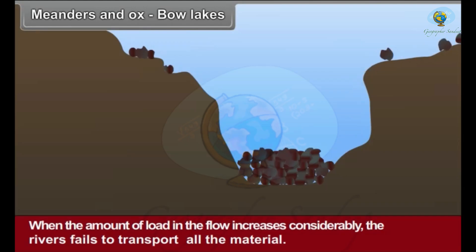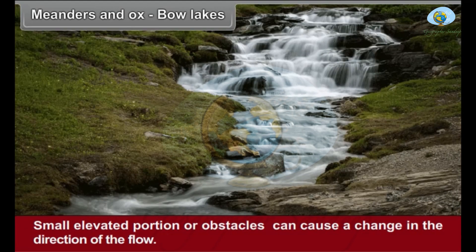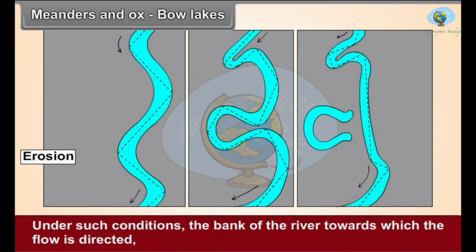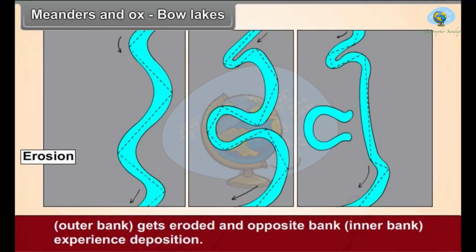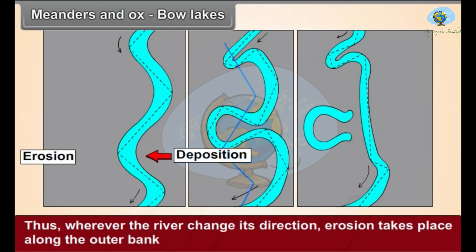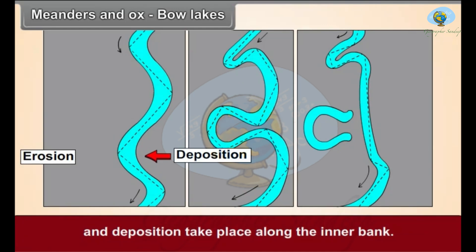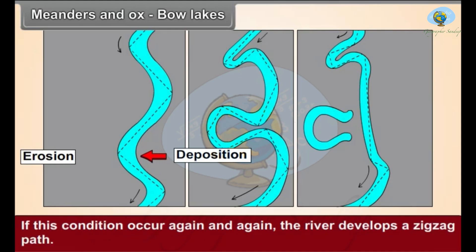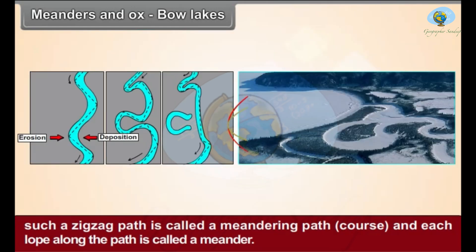Meanders and oxbow lakes: When the amount of load in the flow increases considerably, the river fails to transport all the material. Small elevated portions or obstacles can cause a change in the direction of flow. The outer bank, towards which the flow is directed, gets eroded, while the inner bank experiences deposition. Thus wherever the river changes direction, erosion takes place along the outer bank and deposition along the inner bank. If these conditions occur repeatedly, the river develops a zigzag path called a meandering course, and each loop is called a meander.